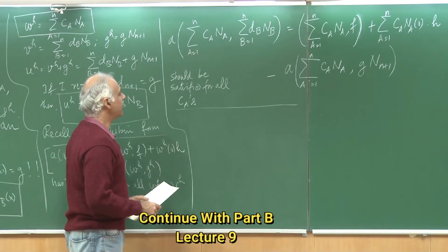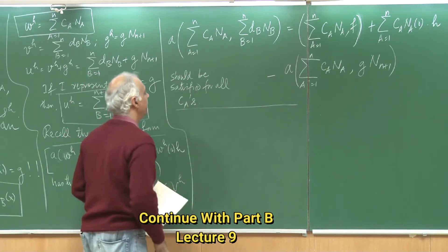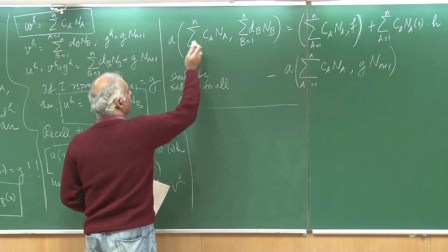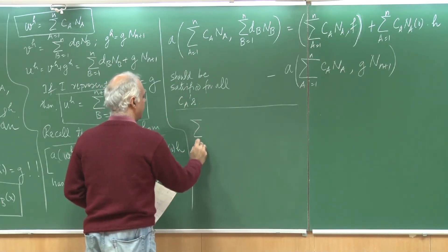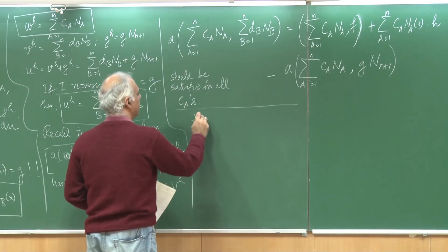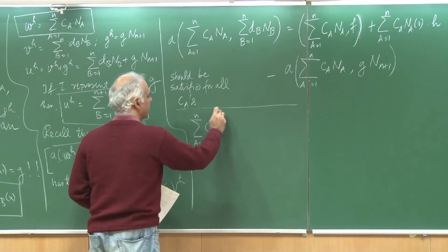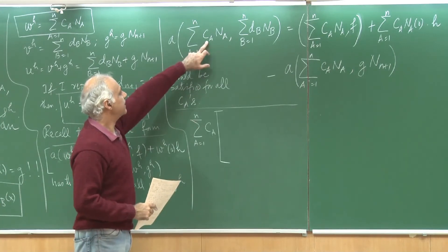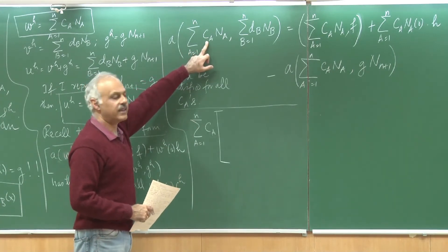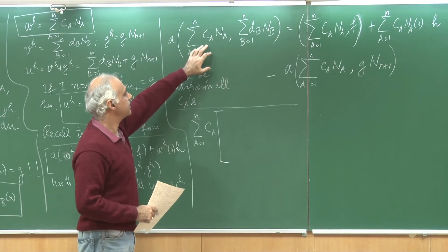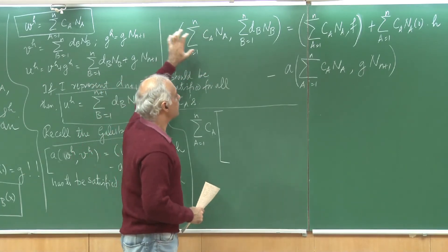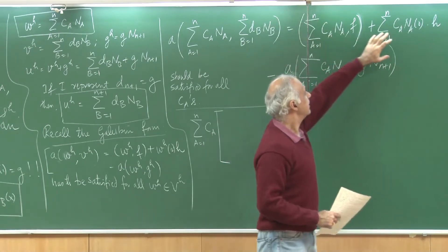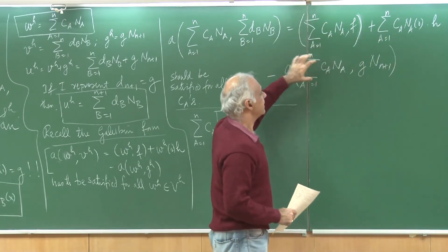We will use the bilinearity of this operator and we are going to do the following. I am going to pull out this term summation a goes from 1 to n c_a and what I would like you to notice is that this term is common actually for all the other terms. I can pull this out likewise from this integral as well. This is already there and then this I could pull out.